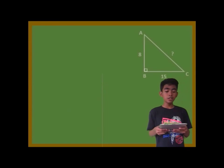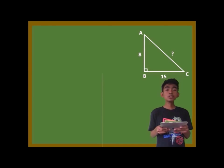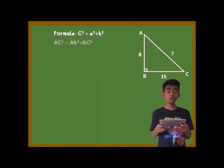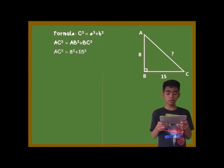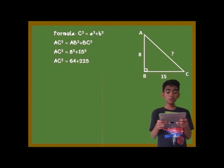In this triangle, you are asked to find the hypotenuse of triangle ABC using the Pythagorean theorem. We will use the formula c squared is equal to a squared plus b squared. So, AC squared is equal to AB squared plus BC squared. Then AC squared is equal to 8 squared plus 15 squared, which gives AC squared is equal to 64 plus 225.